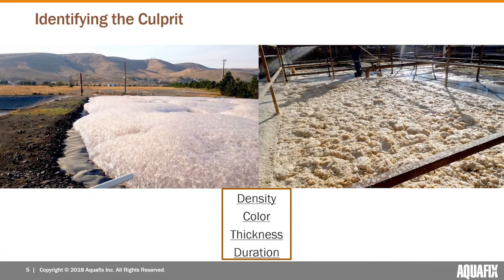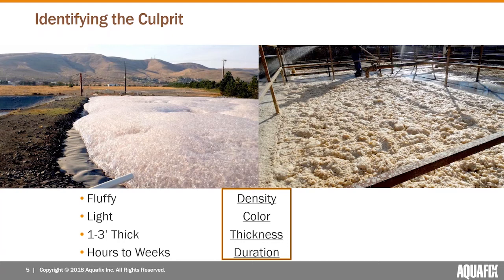The foam on the left is from a wine production facility. Their lagoon had a lot of simple sugars, and a newly installed aerator allowed the bacterial population to grow really quickly. This is a new bacterial foam — fluffy in density. If you sprayed it with a garden hose, it would knock back quickly, though it can come back with agitation. The color is really light, which is typical of new bacteria foams.